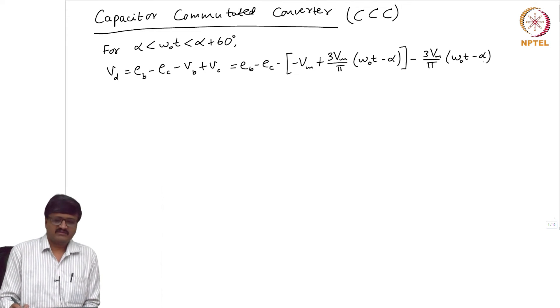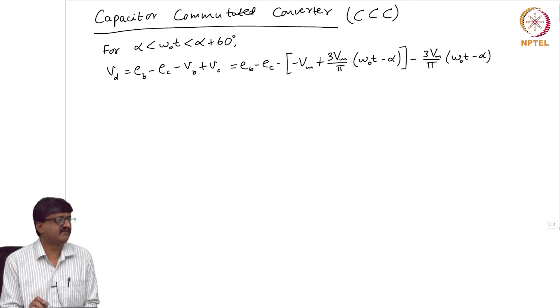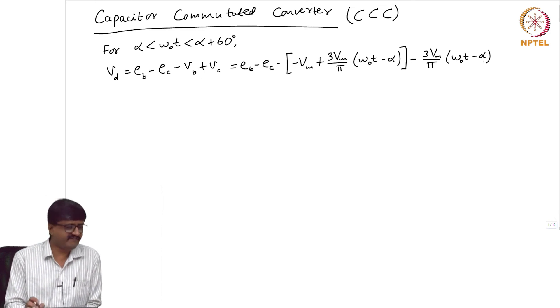Substitute for the expressions for EB and EC and integrate this from alpha to alpha plus 60 degrees, and divide it by pi by 3. You get the expression for the average value.